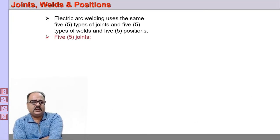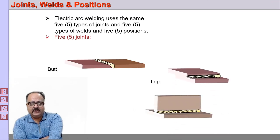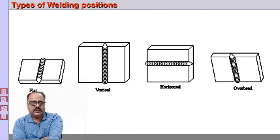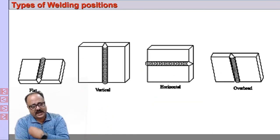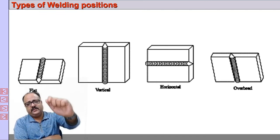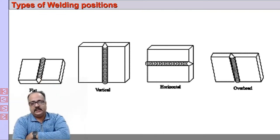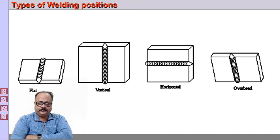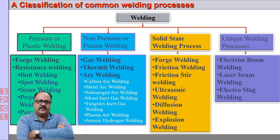Welding position refers to how the weld is performed spatially. You have butt welding, lap welding, T joints, and edge joints. The welding positions include flat welding, vertical welding, horizontal welding, and overhead welding. Welding can be done in these different positions.